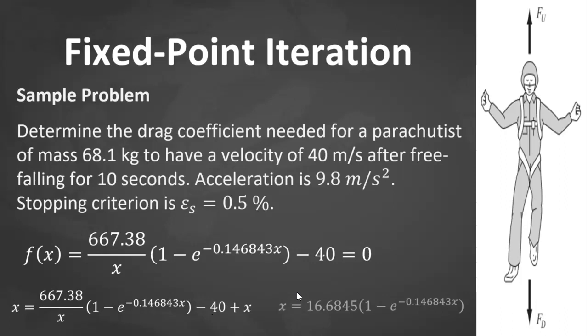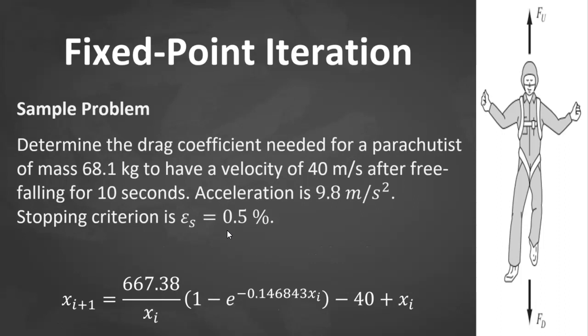You could also manipulate it this way, where x equals by transferring 40 to the right side, then cross-multiply, then x on the right-hand side, 667.38 over 40. But the easiest for coding is to just add x at both sides. So we'll use this one. We need the form xi+1 = g(xi). So this expression here is g(xi). This hand to draw, negative minus 40, is f(x). This is g(xi), which we'll use to compute the root estimate xi+1.